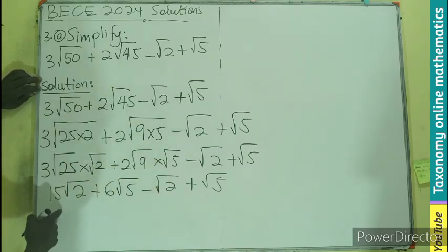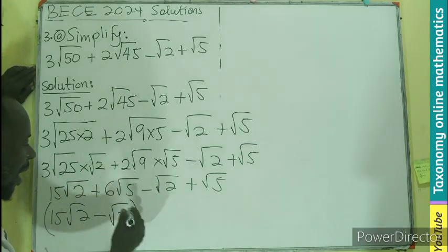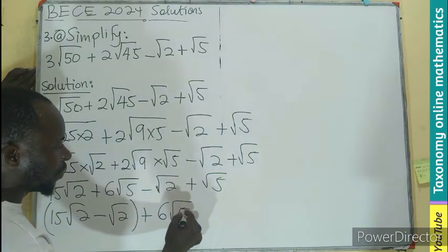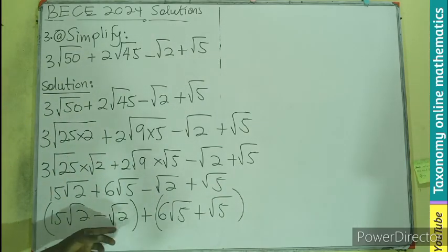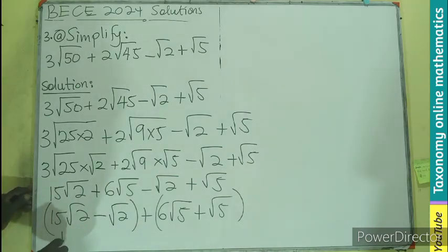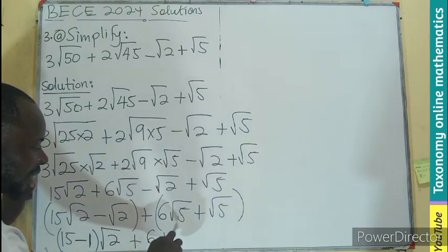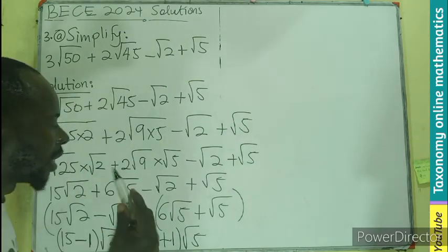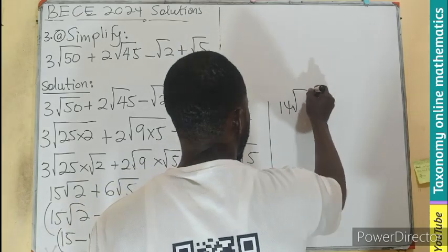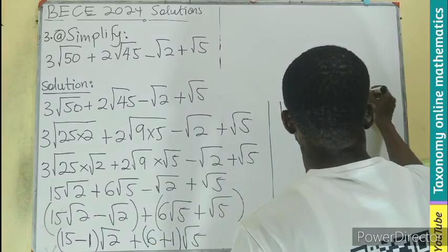We group like terms together, beginning with the root 2 terms: 15 root 2 minus root 2 together, then 6 root 5 plus root 5 together. We pick the coefficients: 15 minus 1 gives 14, multiplied by root 2. Then 6 plus 1 gives 7, multiplied by root 5. So we get 14 root 2 plus 7 root 5.